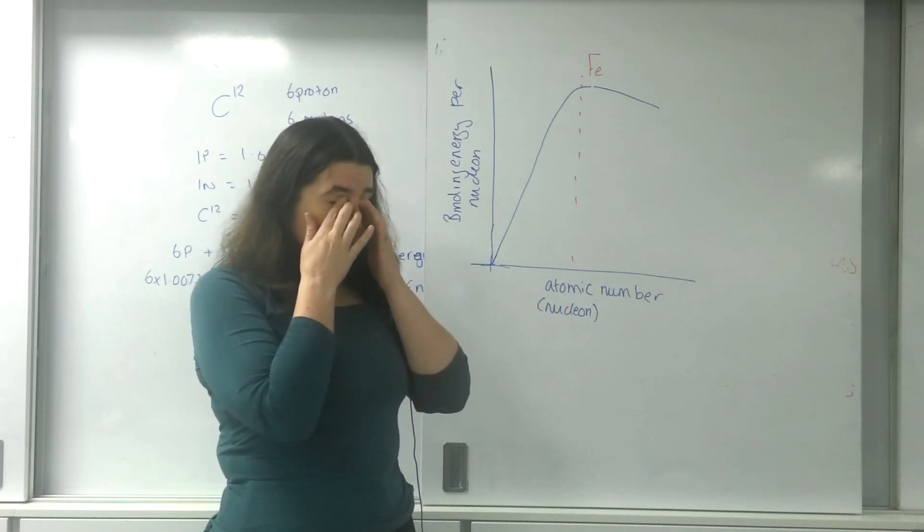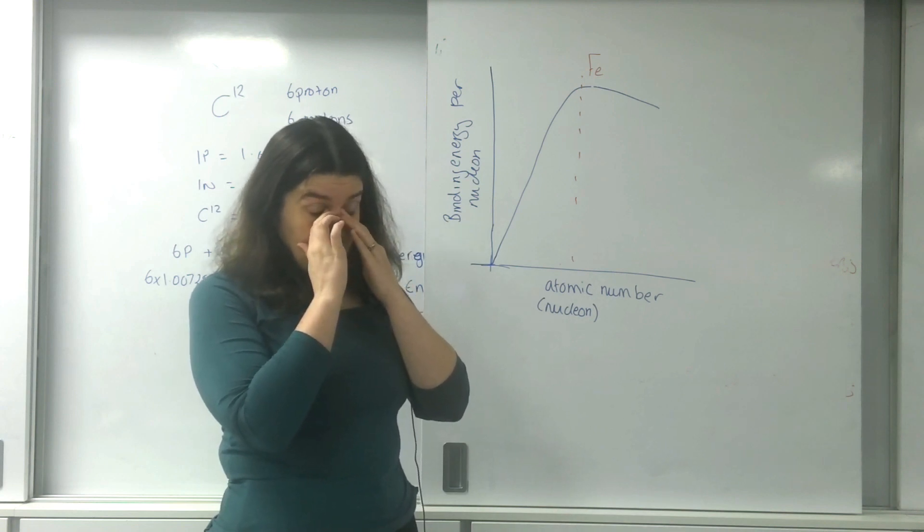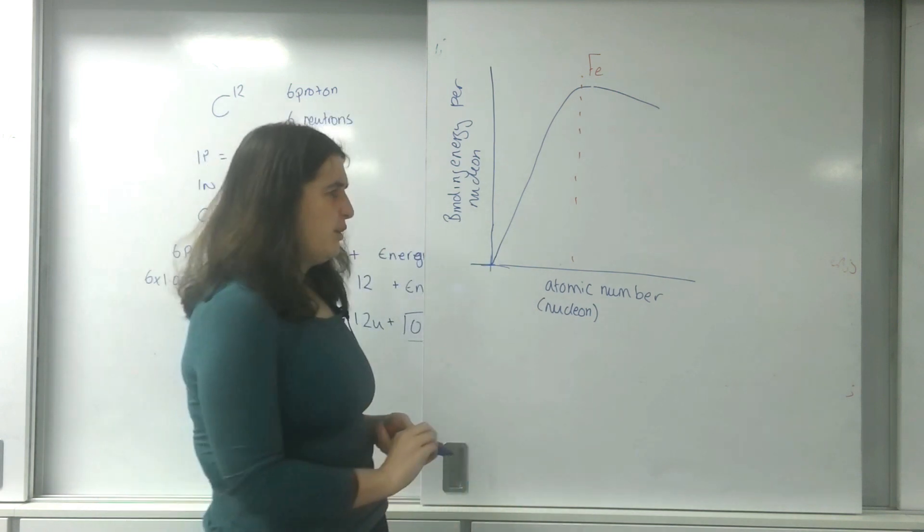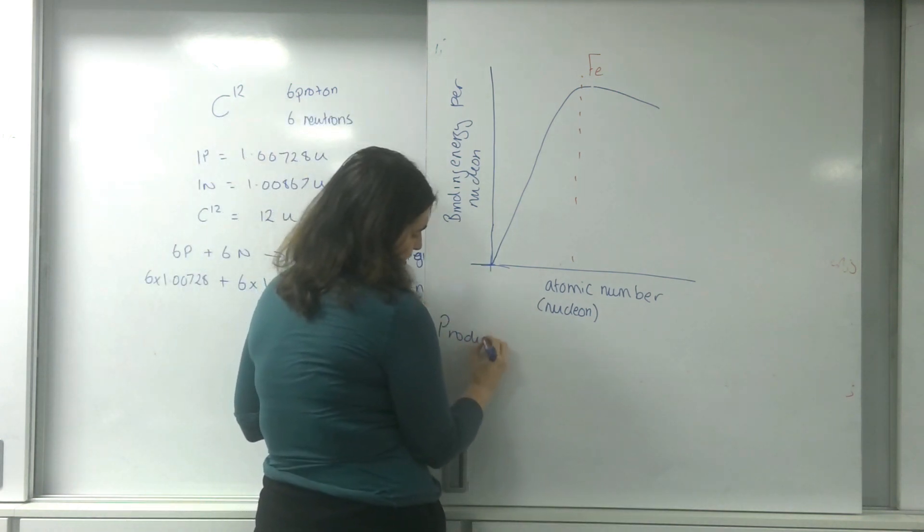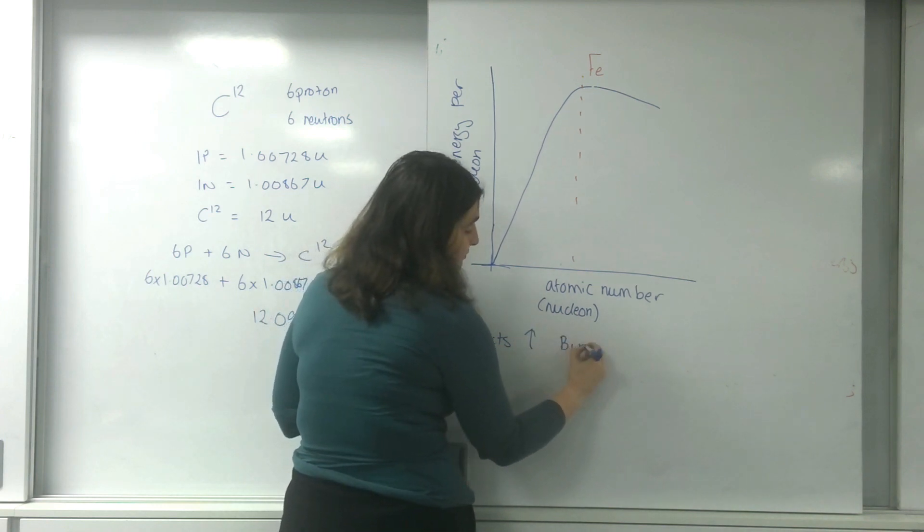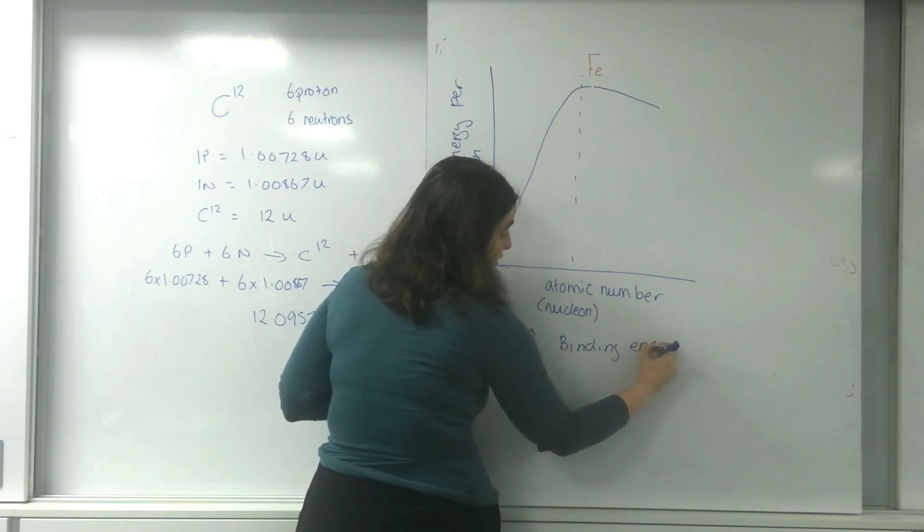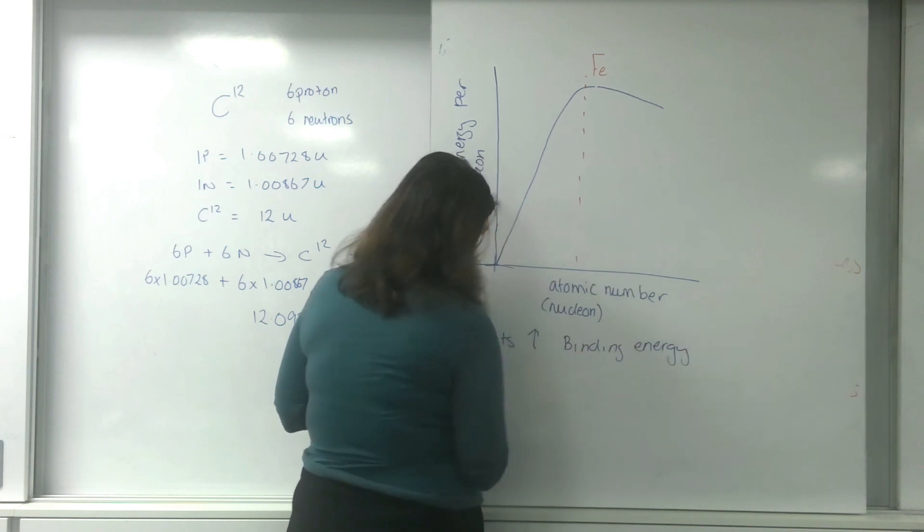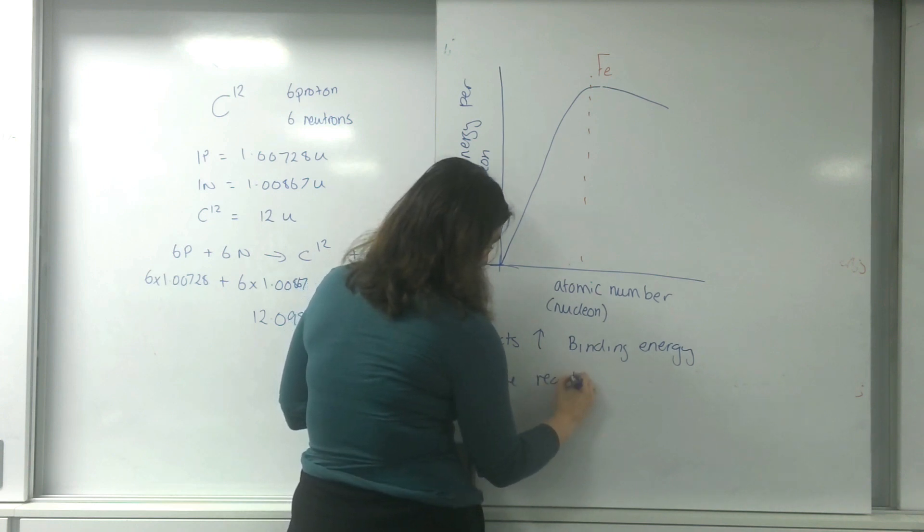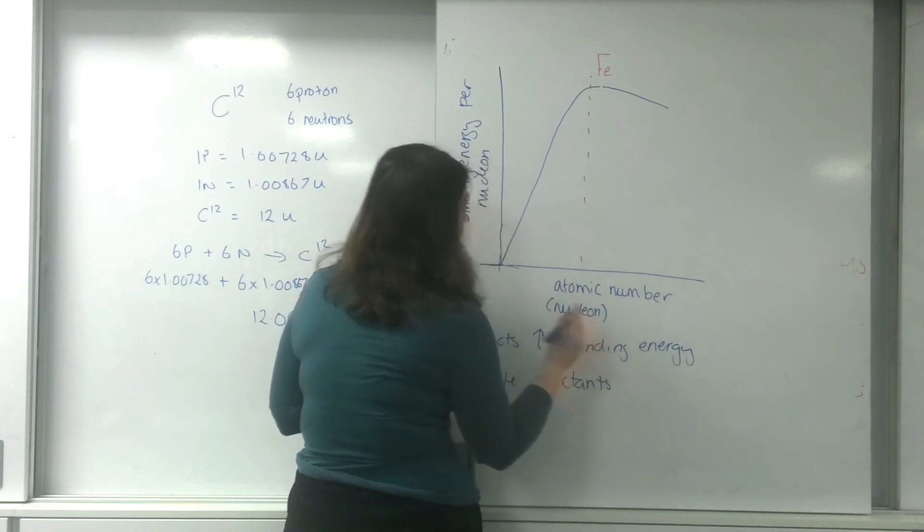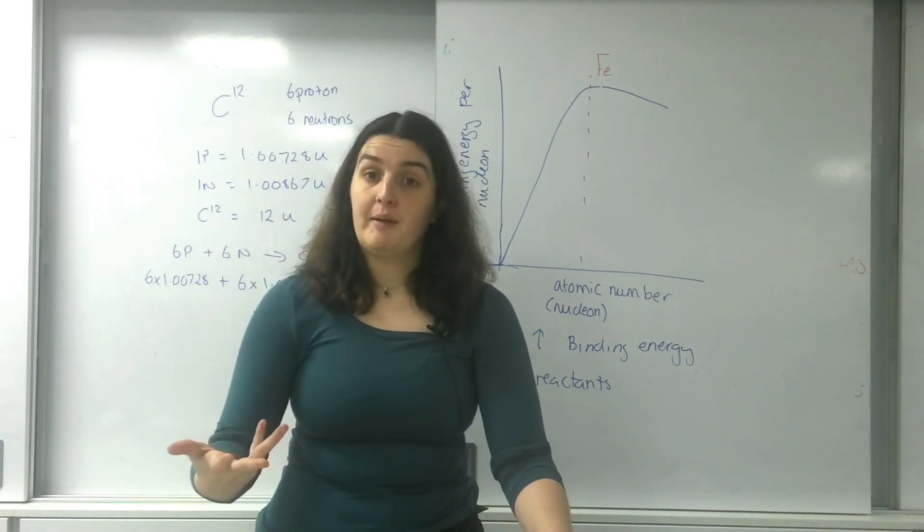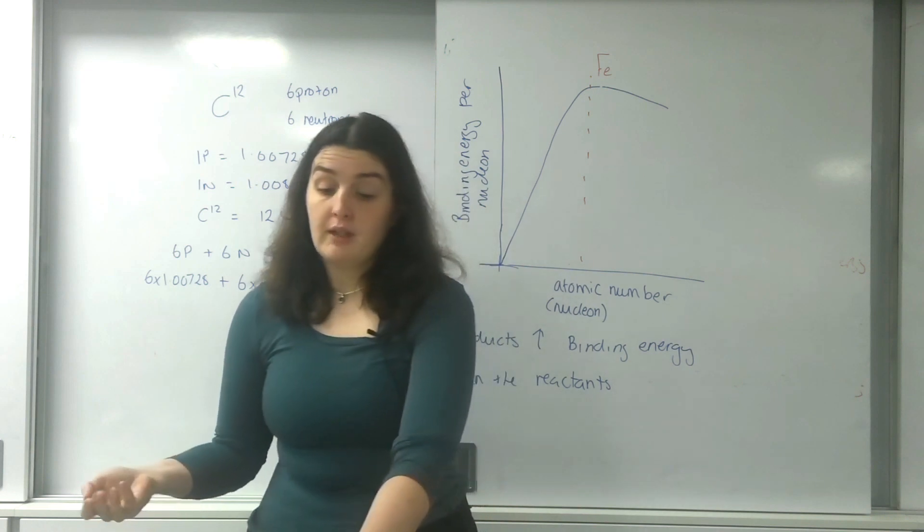This actually leads us to the idea of fusion and fission and about where it can actually work. One of the rules is that whatever you make, the product must have a higher binding energy than the reactants. What that means is up to iron, you get a higher binding energy by adding stuff to it, which is nuclear fusion, adding things together.